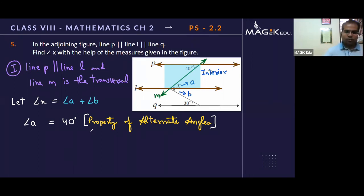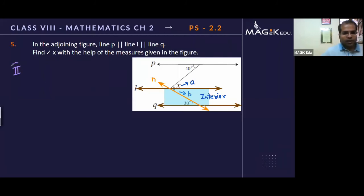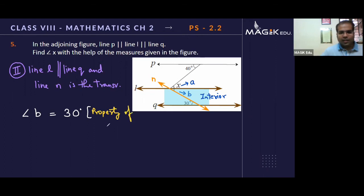Now let's go to part 2. Line l is parallel to line n, and line m is the transversal. With this achievement, I can easily think of b and 30 having a relation. Angle b is 30, and the reason for that is property of alternate angles. It's forming a Z formation. With this fabulous achievement, I can go ahead.